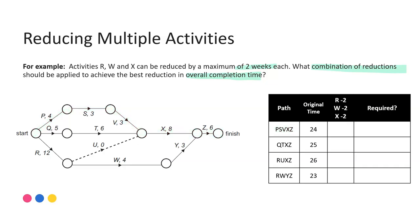When I'm using the table method rather than a forward and backward scan I can identify my critical path. So initially the critical path for this project network is R, U, X, Z with a duration of 26.